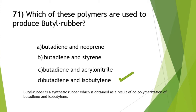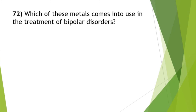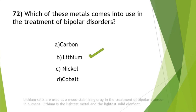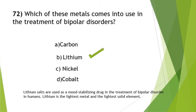There will be one more video (video number 4) in this series completing up to 100 questions. Next: which metal is used in the treatment of bipolar disorders? The answer is option B — lithium. Lithium salts are used as a mood-stabilizing drug in the treatment of bipolar disorder. Lithium is the lightest metal and the lightest solid element.